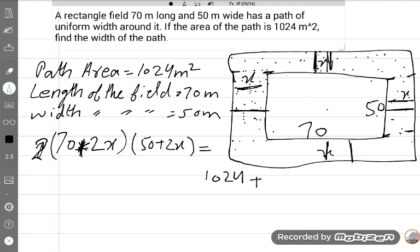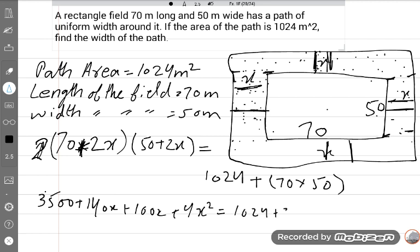Now we will solve this easily using our previous classes method. We will multiply: 3500 + 140x + 100x + 4x² is equal to 1024 + 3500.